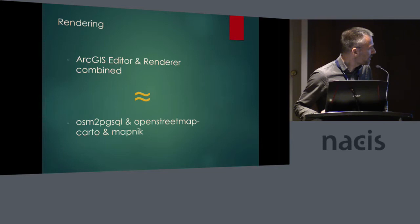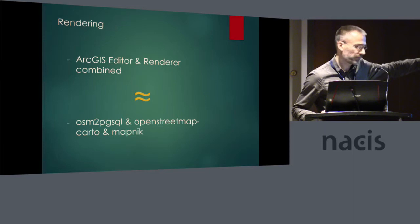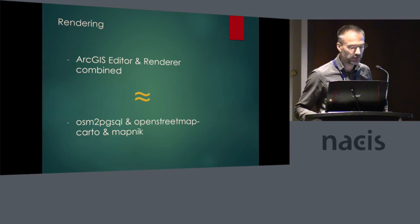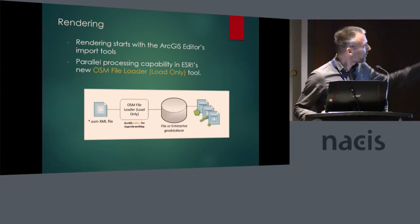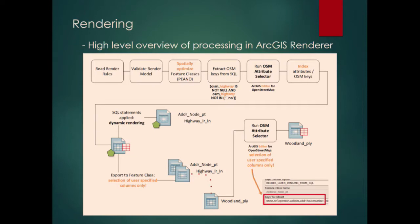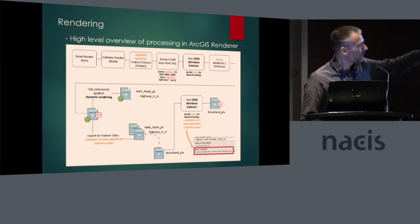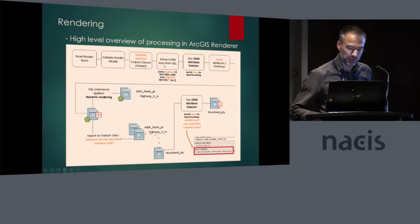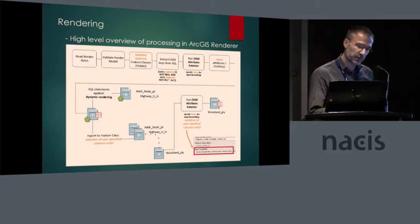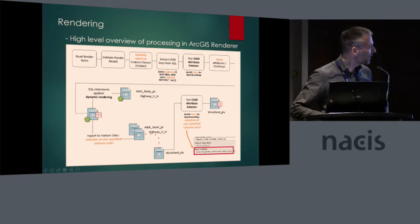About the rendering: for those familiar with osm2pgsql, you should almost equate this — I think that speaks for itself. The rendering starts with the import tools of the ArcGIS Editor, which creates the base point, line, and polygon feature classes. Then we go to a high-level overview of the processing: you start with the render rules, the model is validated, the data layers are spatially optimized, and then the keys are extracted automatically — ensuring the SQL can be executed against the database. The keys are indexed, and then you have a choice between dynamic rendering or export to a feature class.